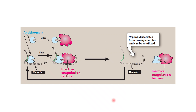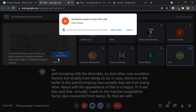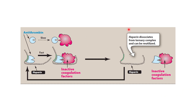Heparin is an injectable anticoagulant that increases the reaction of antithrombin with thrombin and other coagulation factors. In the absence of heparin, antithrombin III reacts with thrombin slowly. With heparin, this reaction occurs rapidly, leading to inactivation of thrombin and other coagulation factors, thereby inhibiting coagulation.